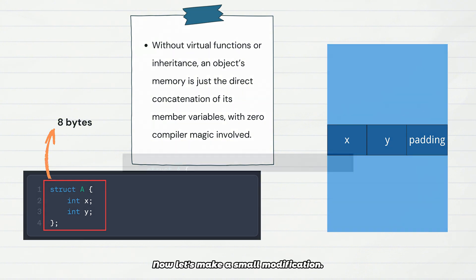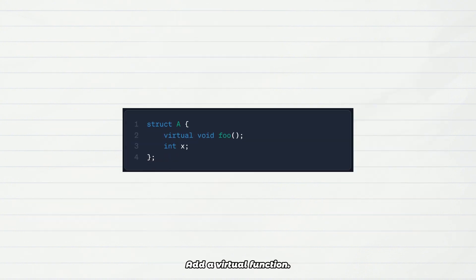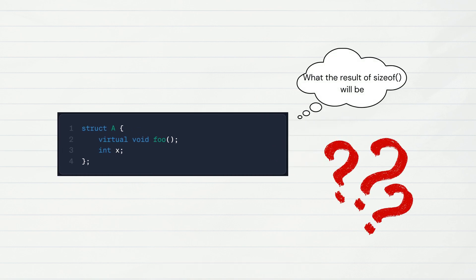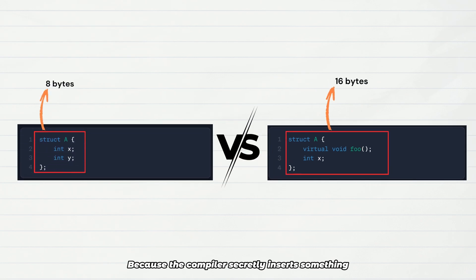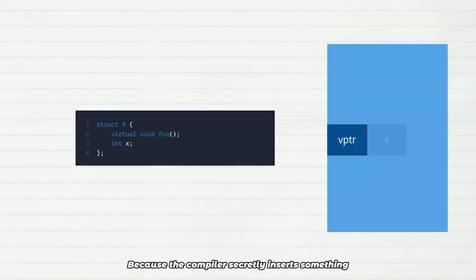Now let's make a small modification: add a virtual function. Guess what the result of sizeof will be? The answer is usually 16 bytes. Why the sudden eight-byte increase? Because the compiler secretly inserts something into the object: a virtual table pointer.